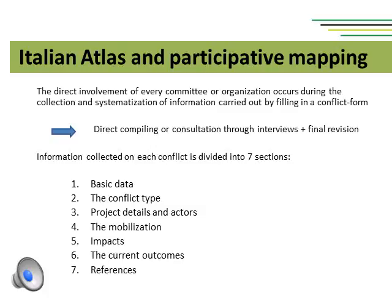The seven sections are: basic data; conflict type; project details and actors; information on the mobilization — for example, starting date, groups mobilizing and forms of mobilization; impacts; data on current outcomes — for example, what the mobilization produced in terms of outcomes for environmental justice, the status of the project, the development of alternative proposals; and an evaluation of the conflict — for example, whether it was successful or not for environmental justice — and the references.